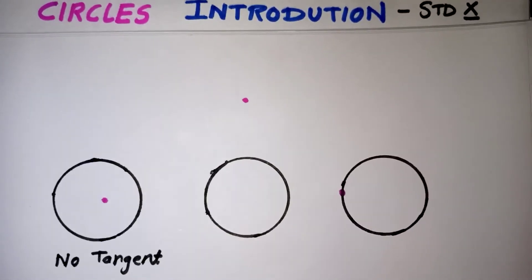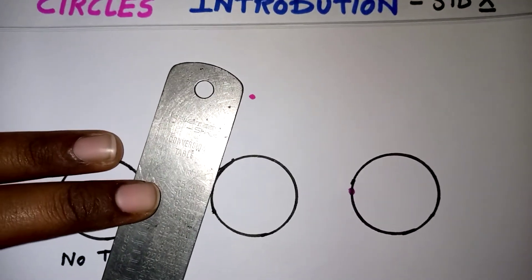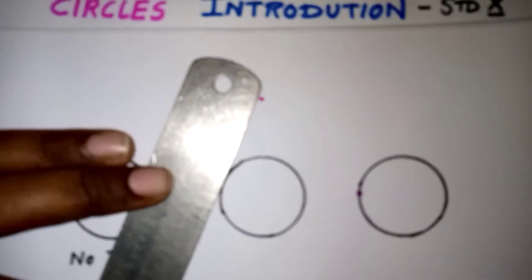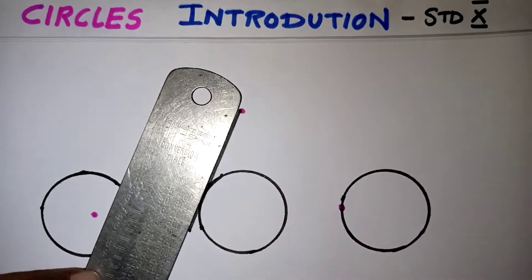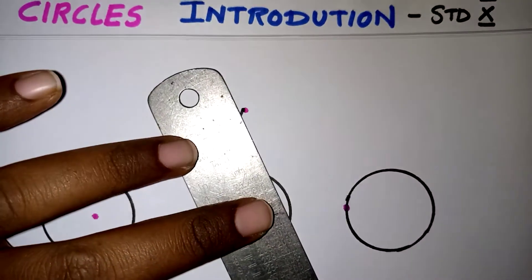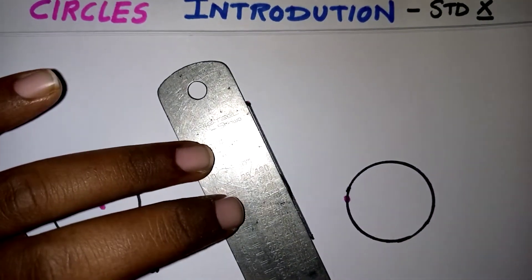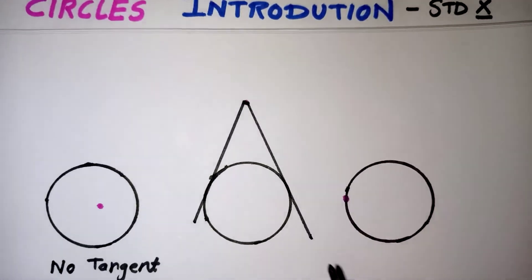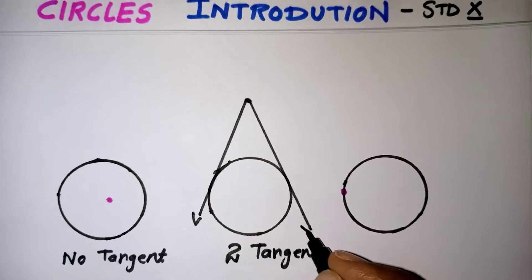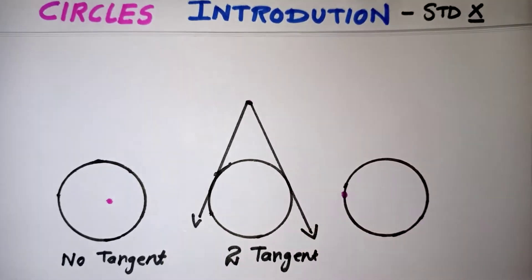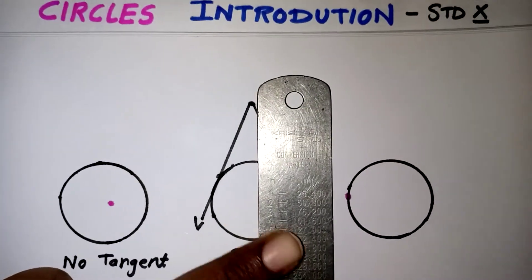Suppose the point is exterior. From this exterior point we can draw two tangents — one tangent on this side and one more tangent on the other side. So from the exterior point of the circle we can draw two different tangents. Tangents have arrow marks because they are lines. Here we also have a point that is on the circle itself.